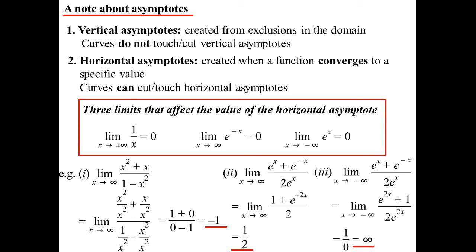Those e to the two X's we know are going to go to zero. So I get one on zero undefined, but that usually means that if it's undefined, we're heading off to infinity.